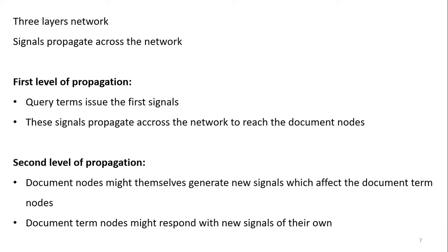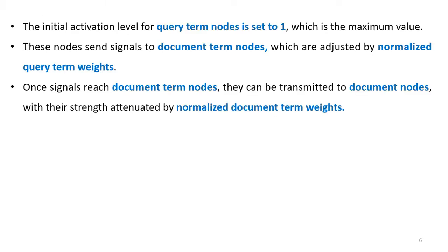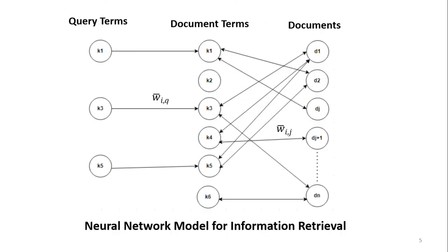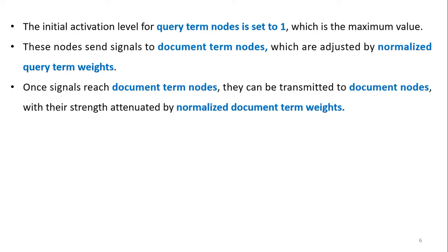At the first level of propagation, query terms issue the first signal, which propagates across the network to reach document nodes. At the second level of propagation, document nodes might themselves generate new signals which affect the document term nodes, and document term nodes might respond with new signals of their own. So in the first level signals go from query to documents, but in subsequent stages there is a continuous interaction between document terms and documents.